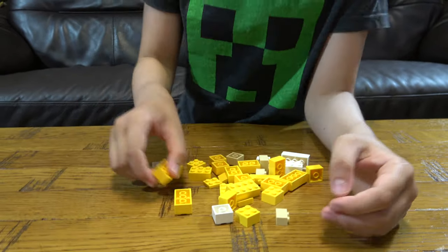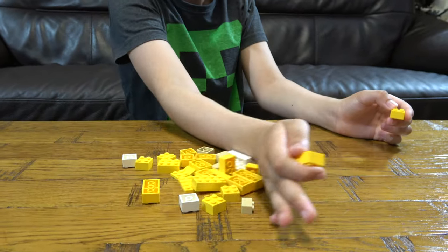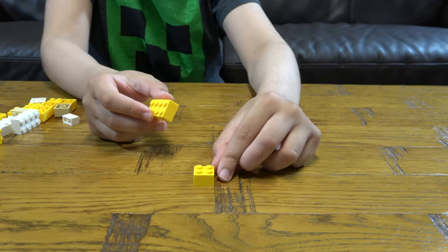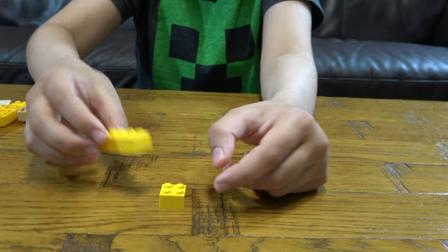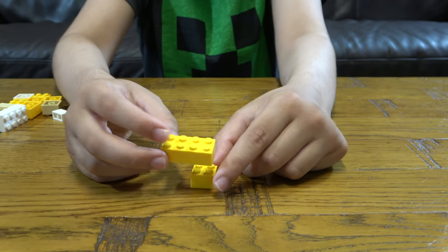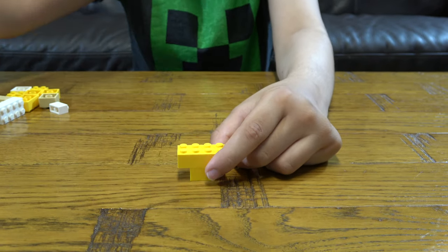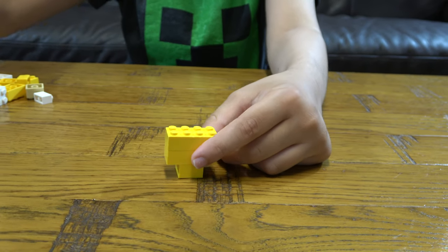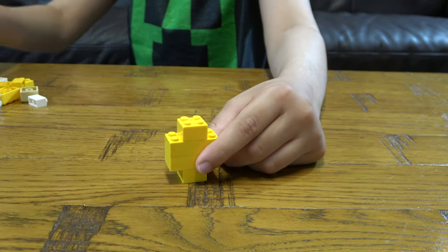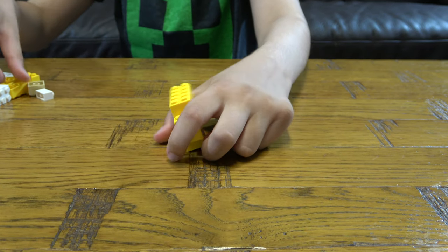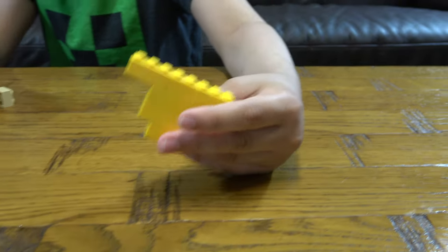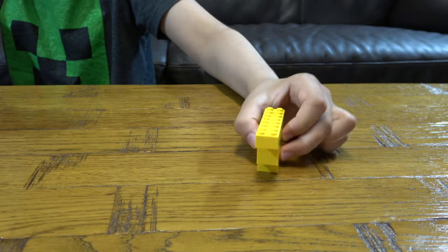First thing we need to do is get these out of the way. Get this piece, a two by four and two by two, a two by four, another two by four, a two by two, a two by three, another two by three. That is the body done. Put that there.